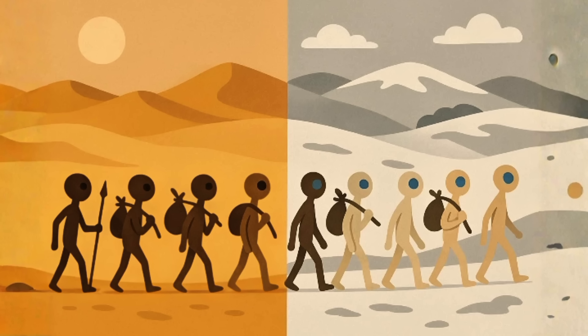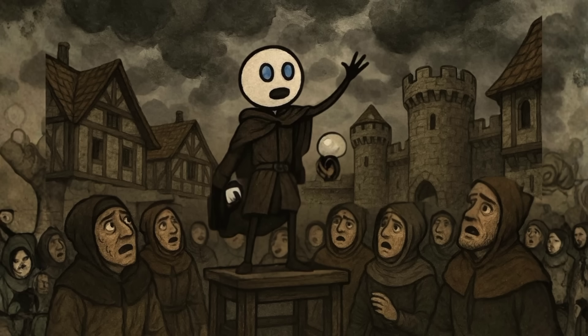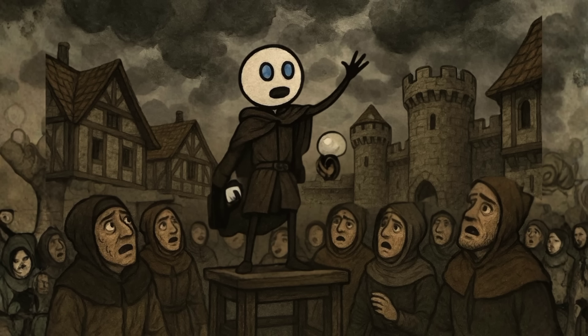Weird myth alert. In medieval times, people thought blue-eyed folks could see into souls or predict the weather, which, to be fair, might just be because they were always squinting at the sun.